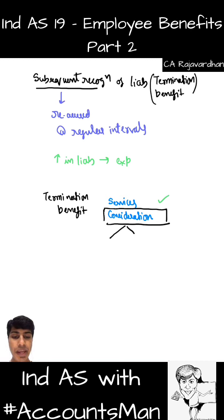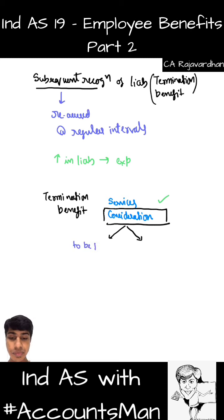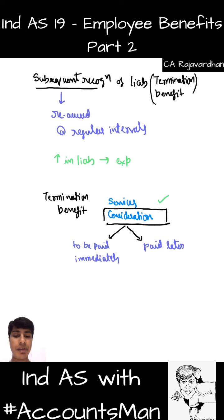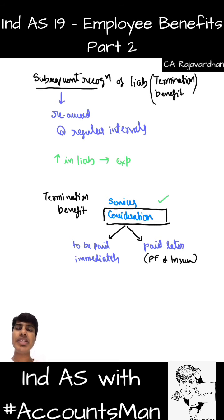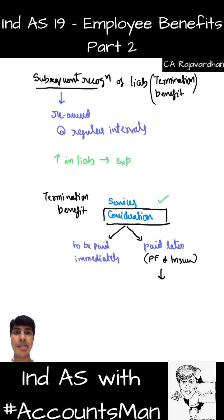With regard to consideration, we need to check whether it is to be paid immediately on termination or later. For example, provident fund or insurance — when I promise provident fund and my employee leaves today, I will not give him the entire PF in one shot; it will be paid in installments. Insurance will be paid at maturity or when the risk materializes. So whenever there is a requirement to pay later, it is not to be regarded as termination benefit — it is to be treated as post-employment benefit.